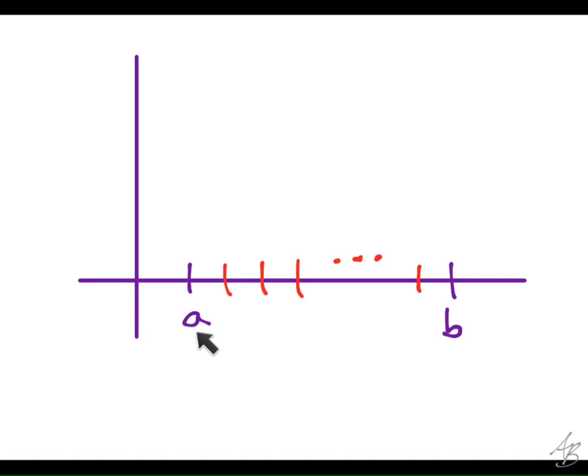So generally we use A and B as the left endpoint and the right endpoint of the interval. And then we'll also use X sub 0 as being equal to A. And then however many rectangles we're going to do or trapezoids we're going to use, X sub N will end up being equal to B.